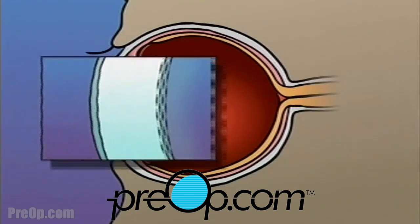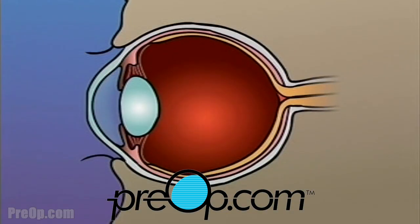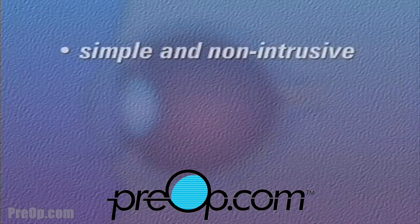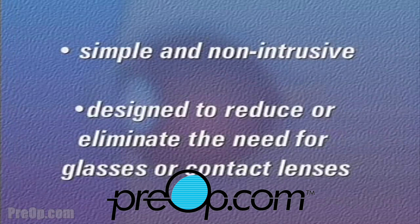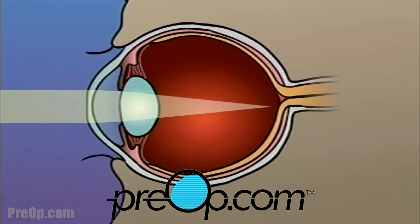In either case, LASIK laser surgery can be used to flatten all or part of the cornea, allowing your doctor to cause the focal point of light entering the eye to fall more closely to the center of the surface of the retina. LASIK laser surgery is a relatively simple and non-intrusive procedure designed to reduce or eliminate the need for glasses or contact lenses, and generally does not have any effect on the patient's overall health. There are no risks in choosing not to have the surgery.